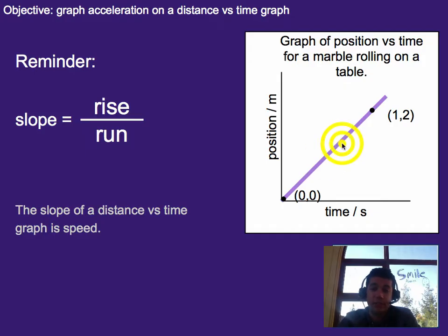For this case, it was a constant speed. And so as a result, the slope stayed the same the entire time.